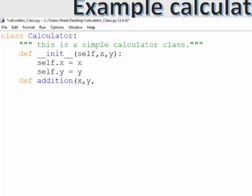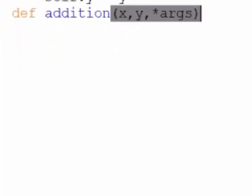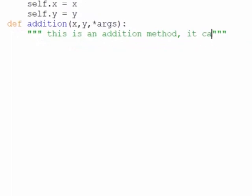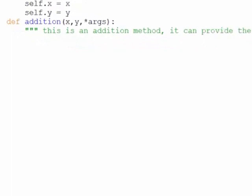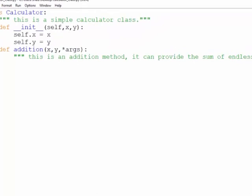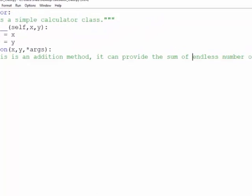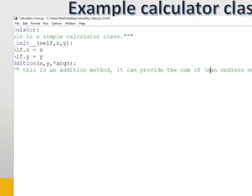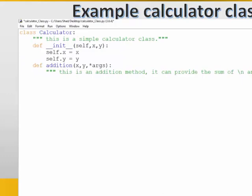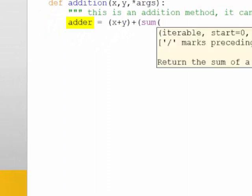The first method that we are going to use is addition method in order to add some numbers together. For every method, you can write down help text like the help text we wrote for the calculator class. This is a text that helps the user to understand what the method is about. It is important to bear that in mind. Whenever you write a method, the initialization runs the self. So that's why we use self. Now, we have a local variable called adder, which sums up x and y with the sum of the arguments that a user provides. Then we return adder.